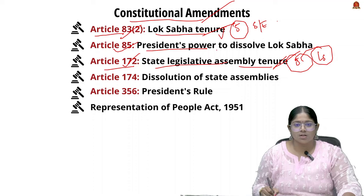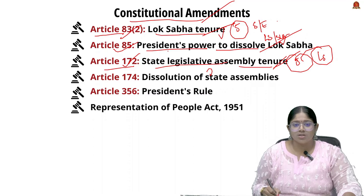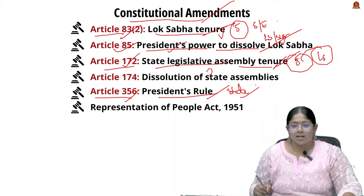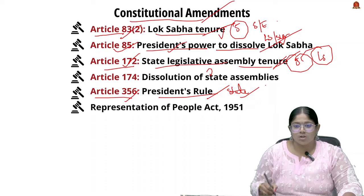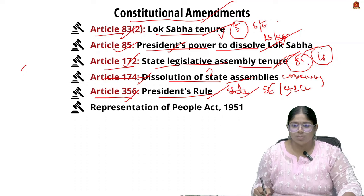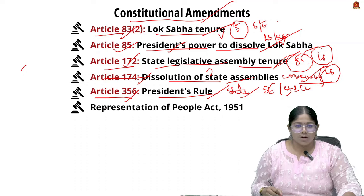Article 85 talks about the President's power to dissolve the Lok Sabha. For simultaneous elections to happen, changes need to be made regarding the imposition of President's Rule. Similarly, Article 356, which deals with imposing President's Rule in states, needs to be changed to ensure synchronization of state-level and central-level elections. Article 174, which deals with dissolution of state assemblies and convening of sessions, also needs to be aligned with Lok Sabha election timings.